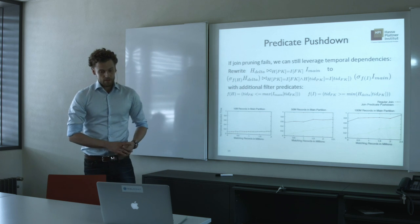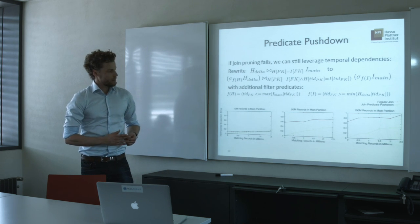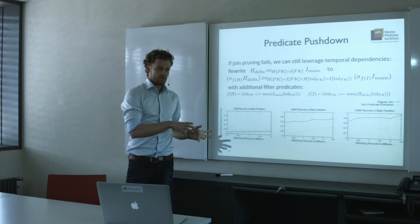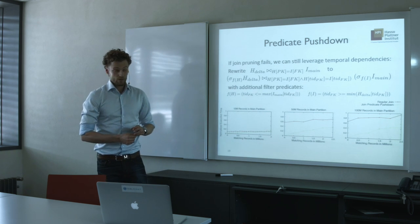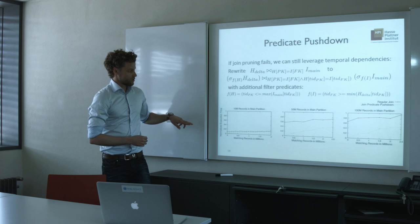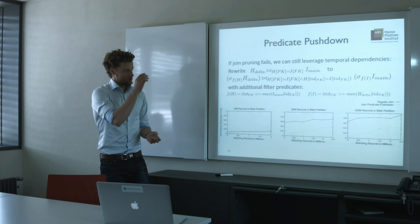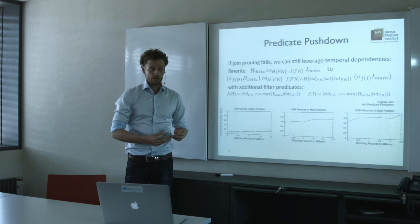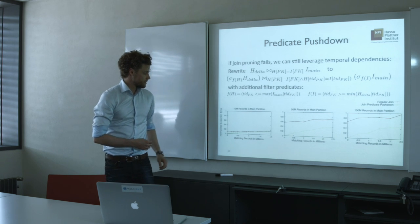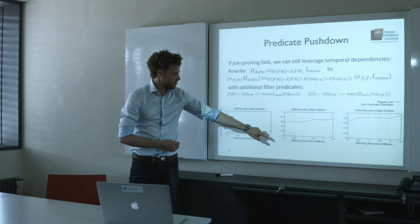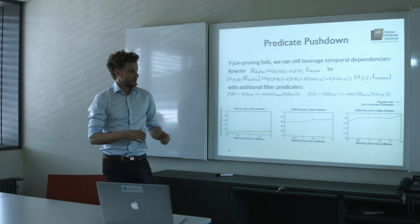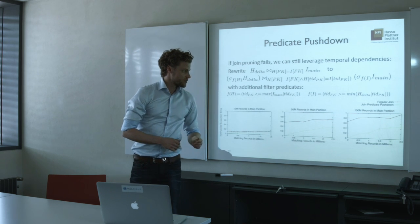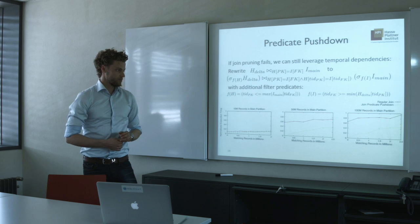The last experiment is the predicate pushdown I mentioned, which is when the pruning fails you can still use the temporal information you have in your data to do a pushdown to basically filter your records first and then do the join query. And that, depending on the number of records in your main partition, gives us a much increasing performance benefit up to a factor of four.